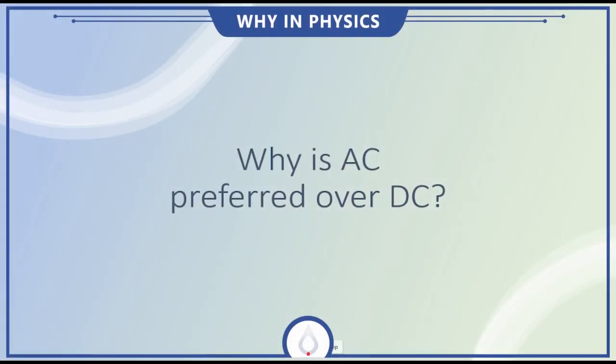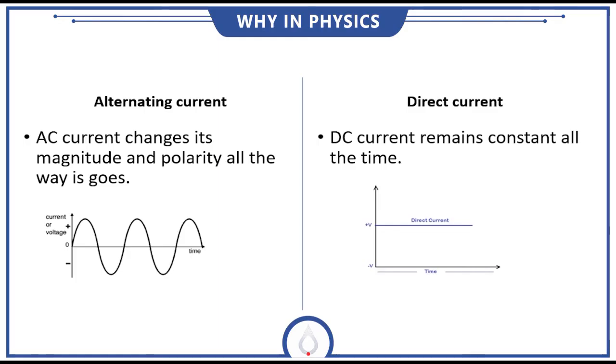Assalamu alaikum, welcome to Quanta Publishers. Myself Muhammad Zaim Zafar, and in today's video we shall discuss why is AC preferred over DC. So as we know, AC is a type of current which is called alternating current and DC is called direct current.